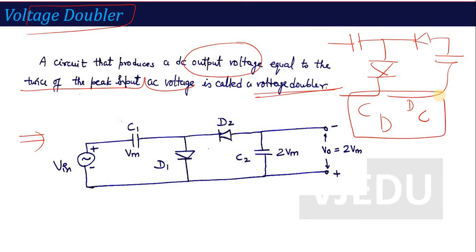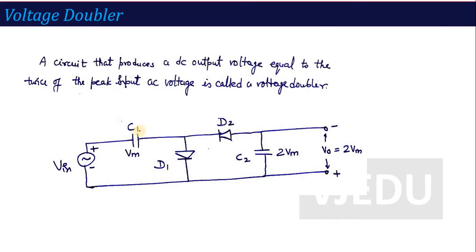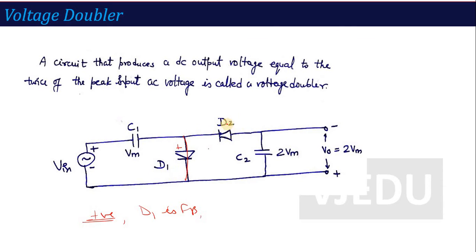How does the Voltage Doubler work? During the positive half cycle, diode D1 is forward biased (short circuit) because this terminal is positive with respect to the other. As a result, D2 becomes reverse biased (open circuit). Due to D1 being short, the circuit path through D2 is broken. The capacitor C1 charges through the input supply — applying KVL: VI minus VC1 = 0, so VC1 = VI = VM. Capacitor C1 charges up to VM during the positive half cycle.